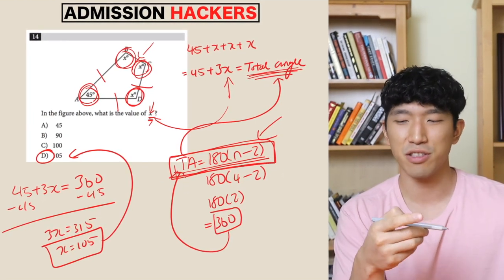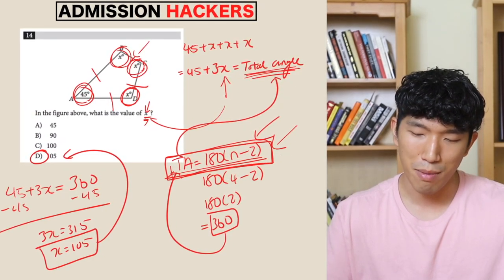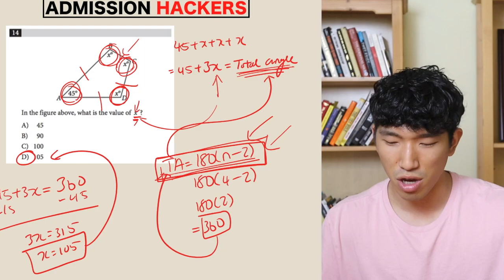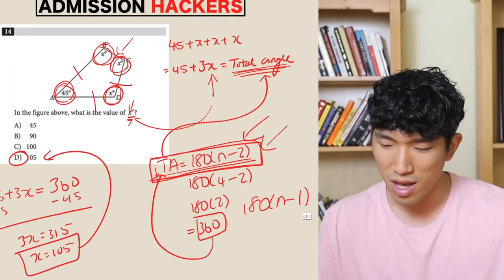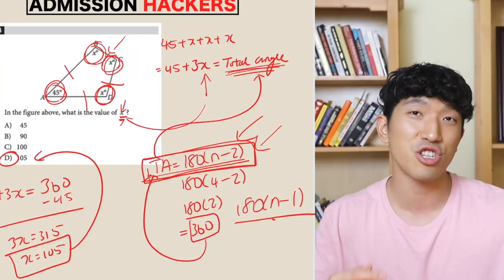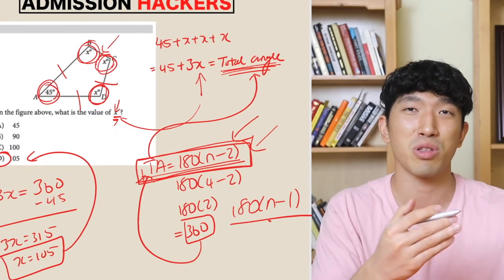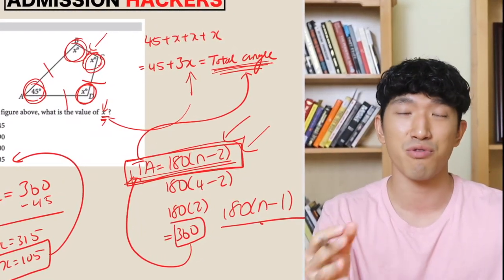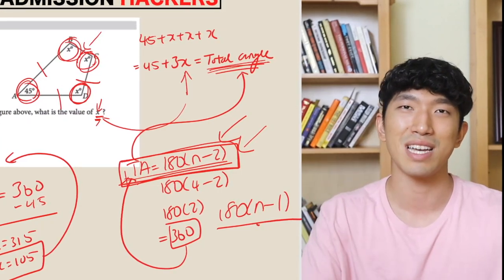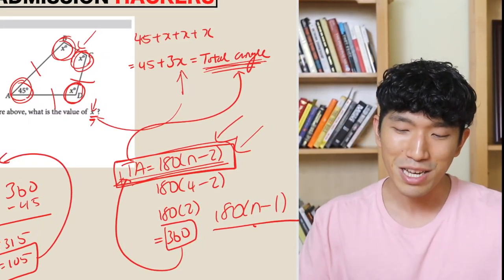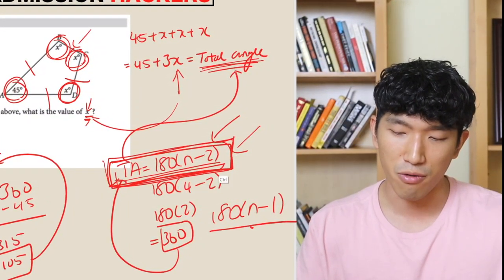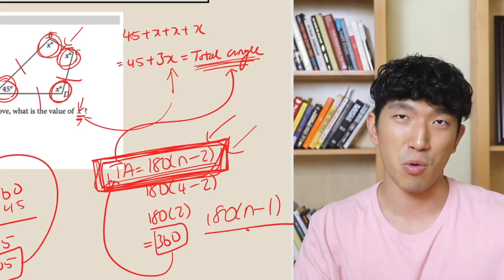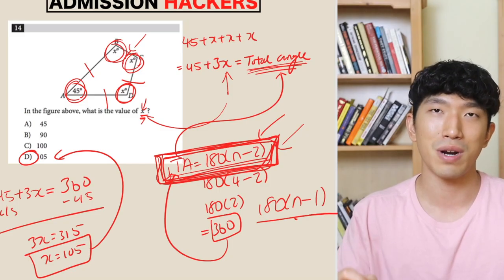I actually had a student who was getting offline tutoring. She was supposed to remember this equation, but she had a little brain fart when she was taking the SAT. She thought it was 180 times (N minus 1) and calculated using that, so she got the question wrong. It wasn't a simple four or three-sided shape — it was like six, seven, or eight sides. So make sure you really know this total angle formula because it's one of those questions where you either know it or you don't. Just by knowing this formula, you'll be able to get the question right.